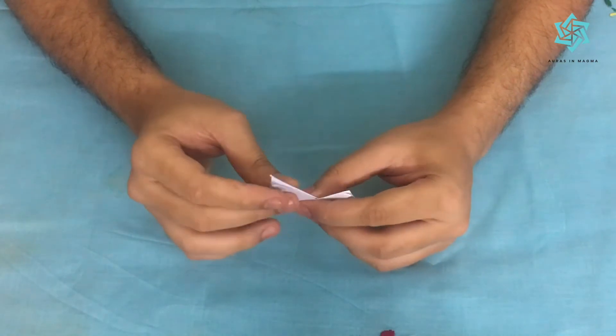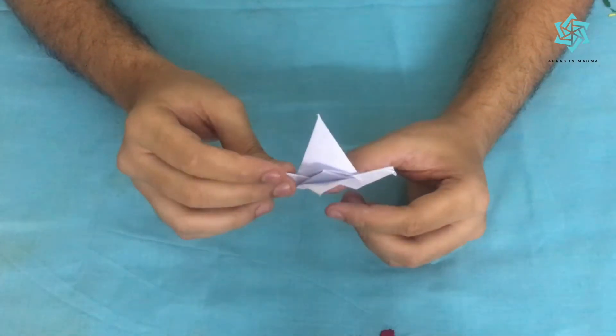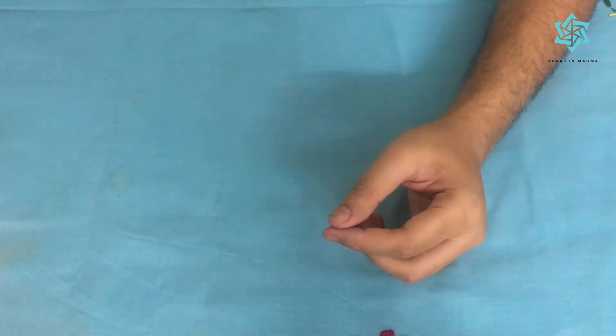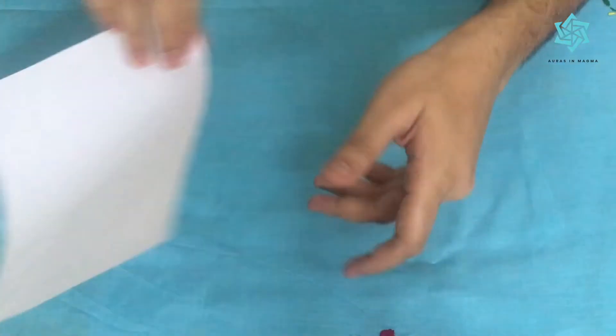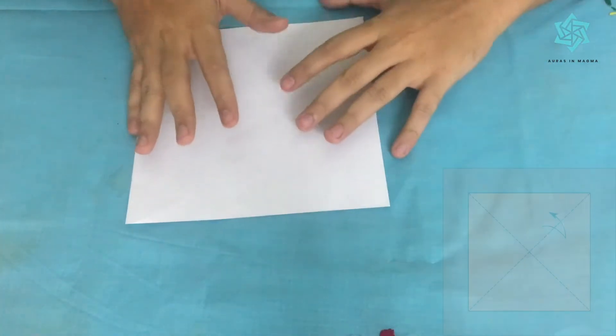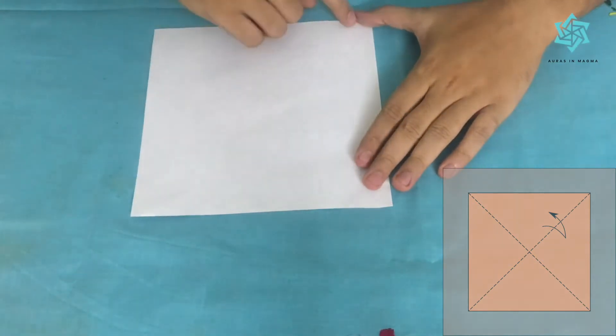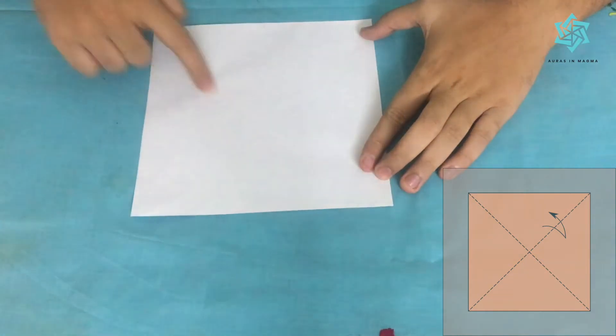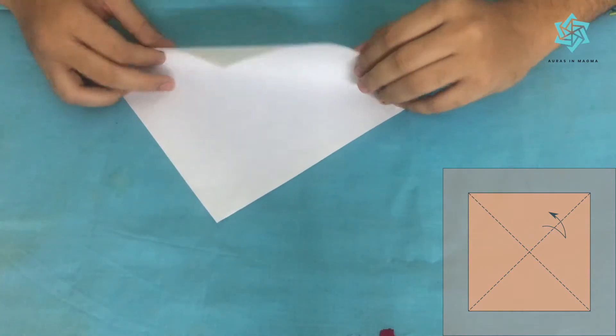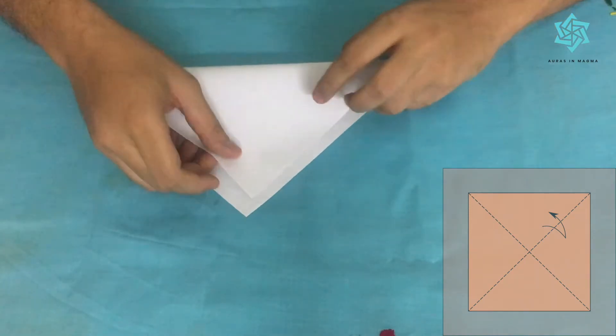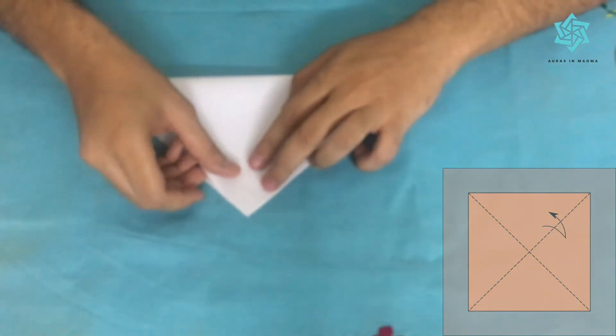So without further ado, let's start folding a flappy bird. We start with a square sheet of paper and we'll have to make the bird base on the square sheet of paper. Firstly we'll fold it along these diagonals. We'll take one of these corners and put it on the corner diagonally opposite to it.